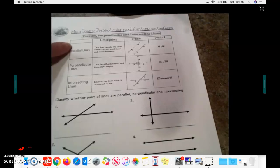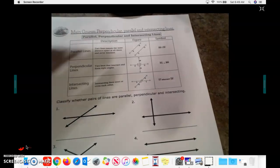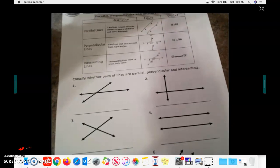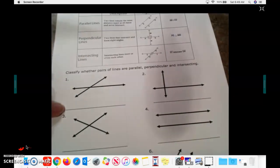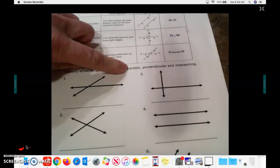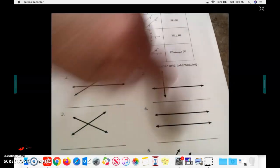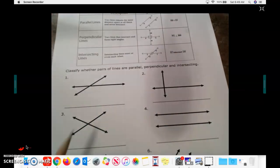So, using this table, you're going to go down below, and you're going to classify, and classify means that you're going to write on the line whether these lines are parallel, perpendicular, or intersecting. So you're going to write it there on the line.